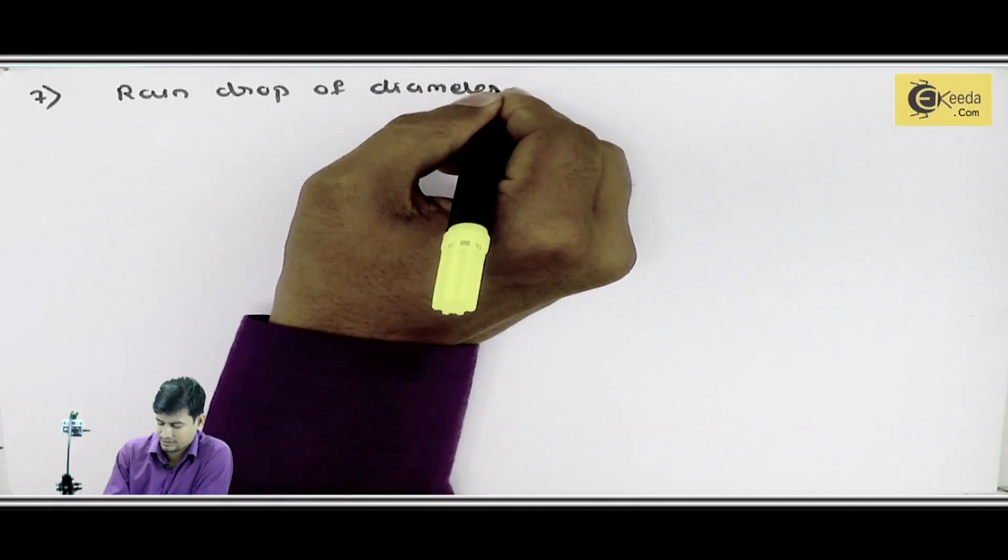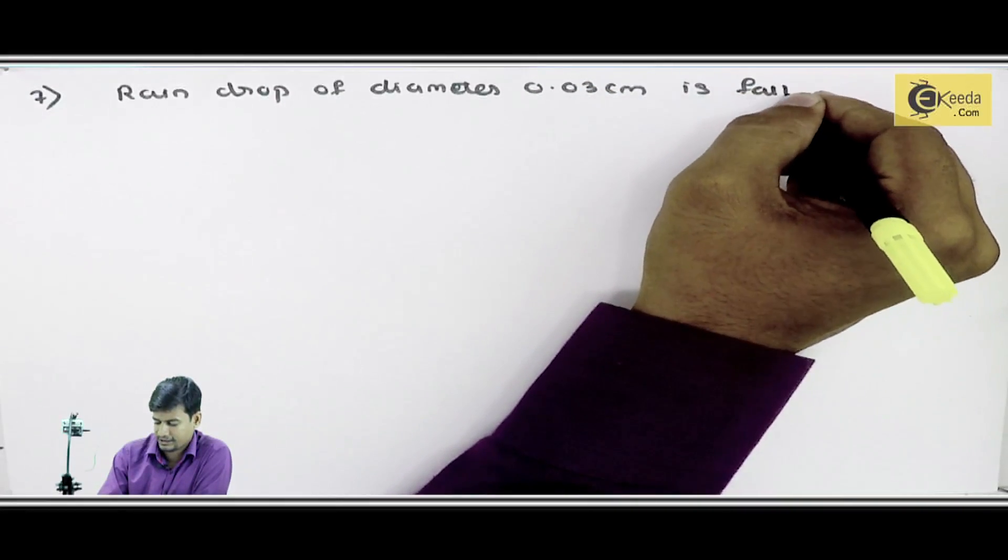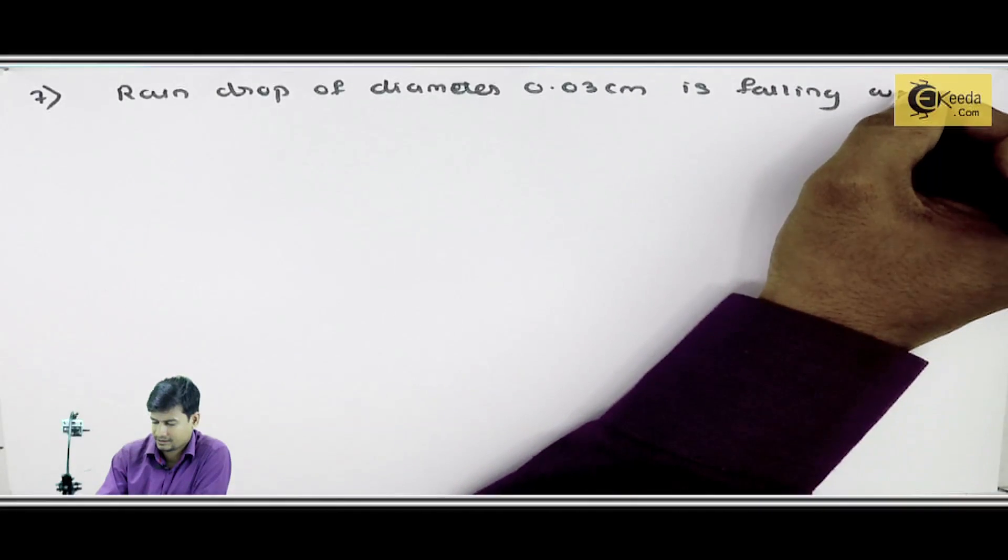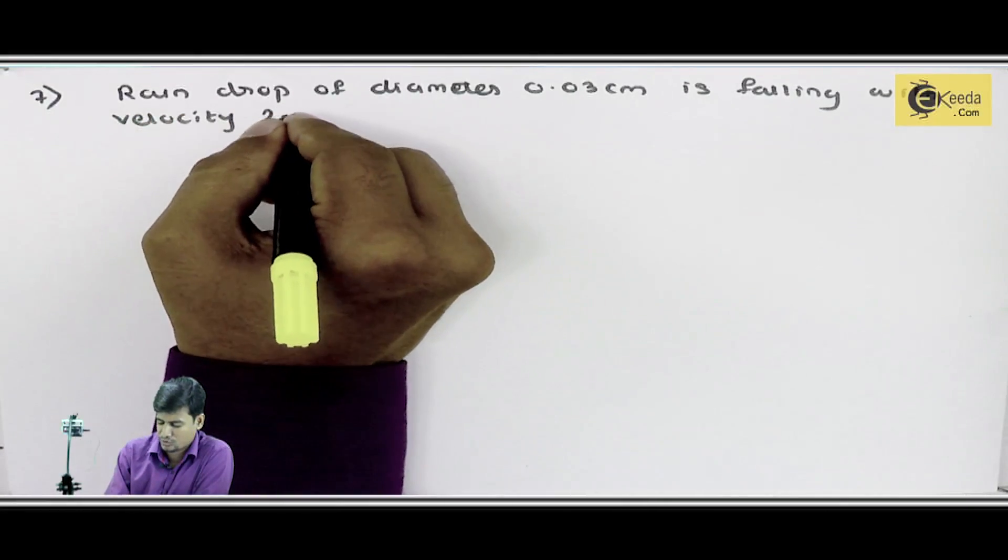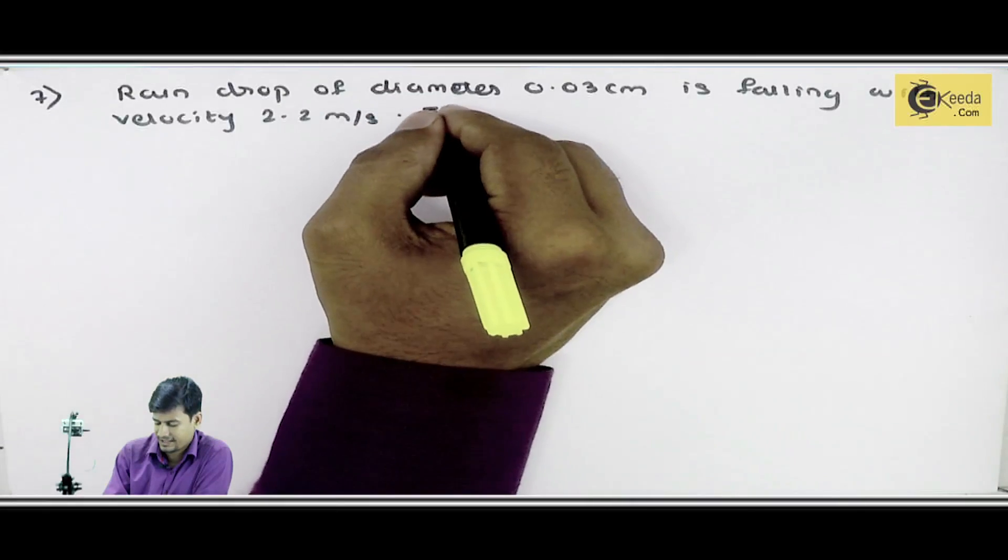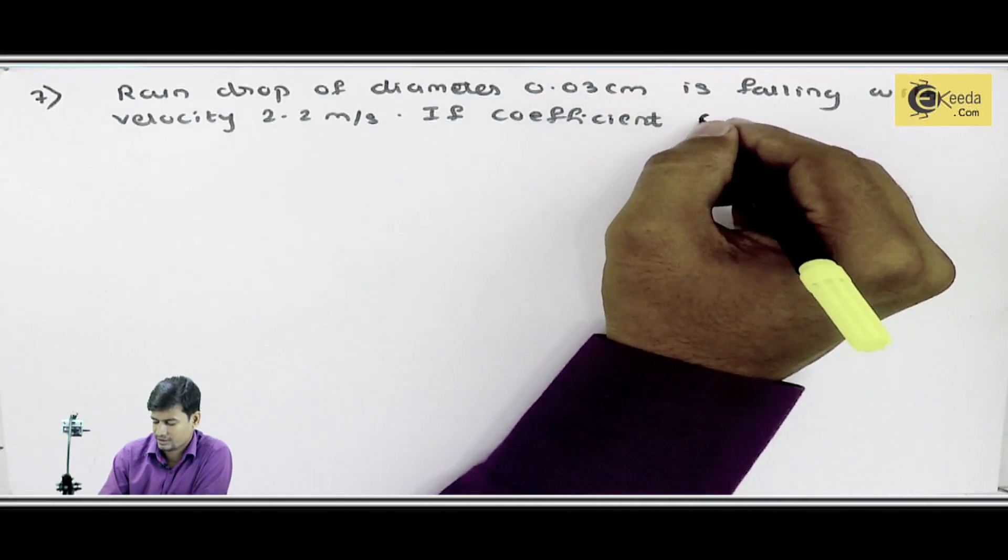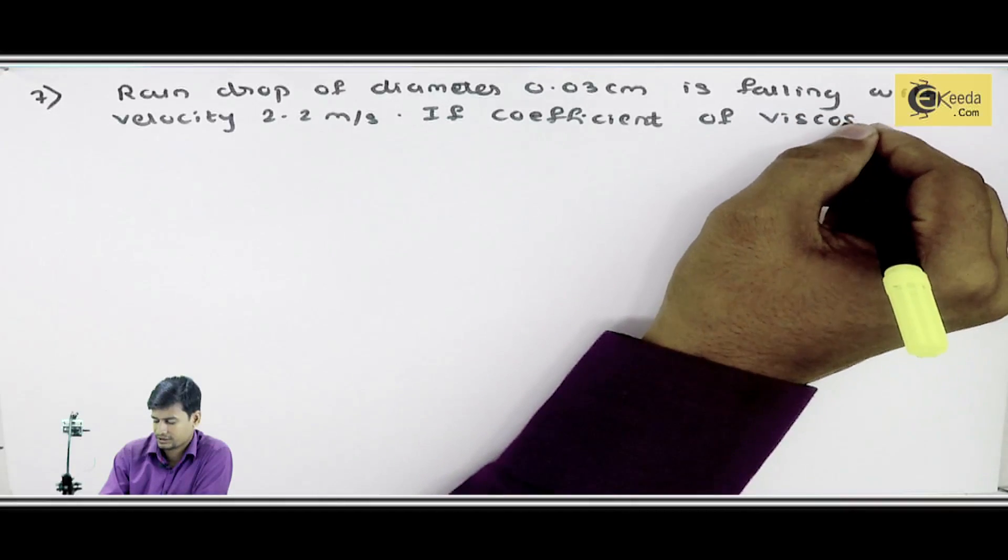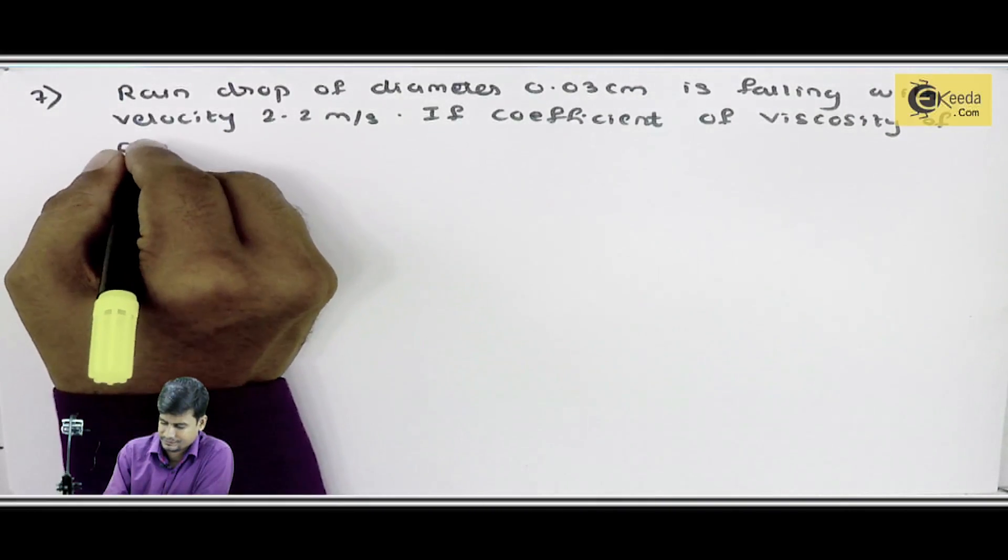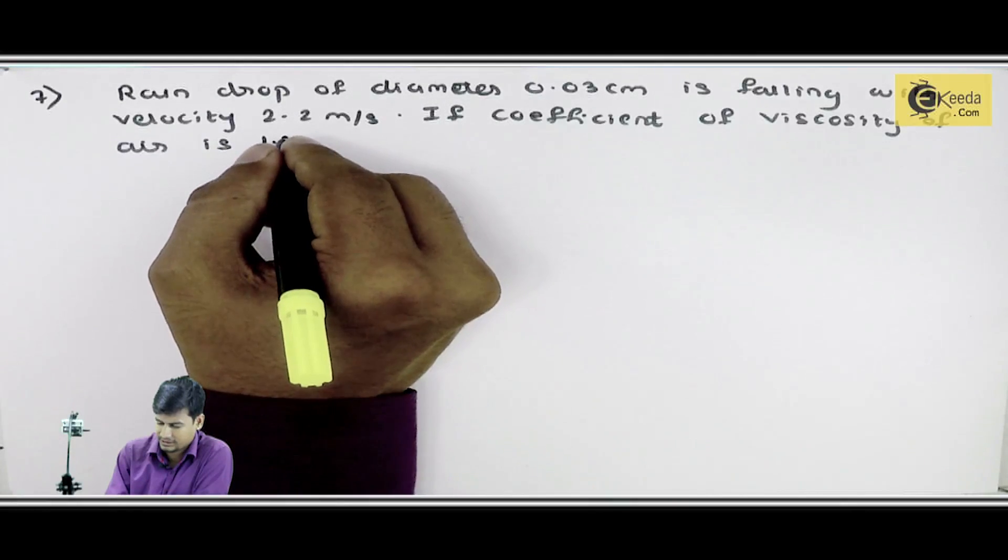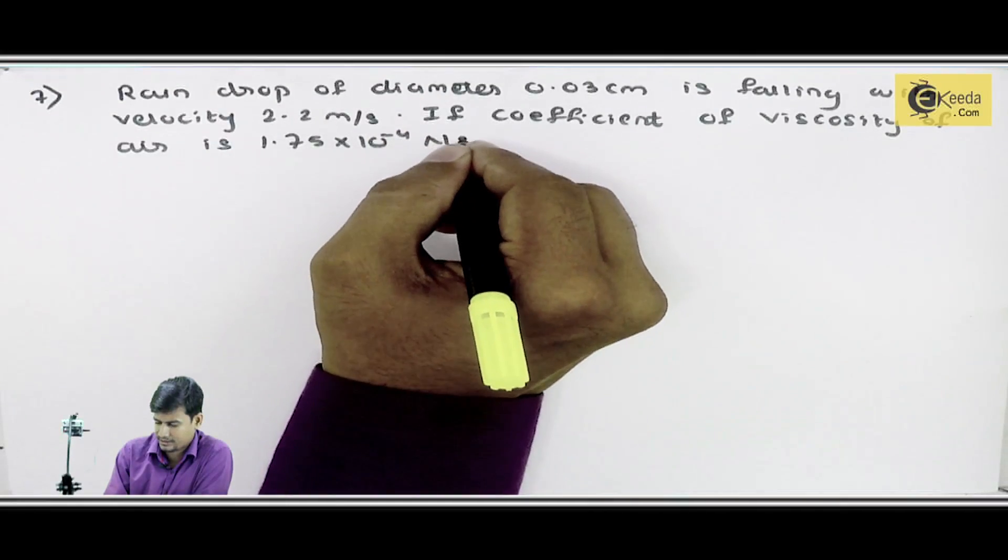Raindrop of diameter 0.03 centimeter is falling with velocity 2.2 meter per second. If coefficient of viscosity of air is 1.75 into 10 raise to power minus 4 newton second per meter square.